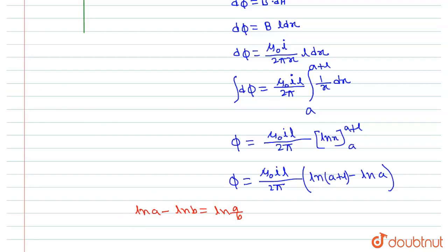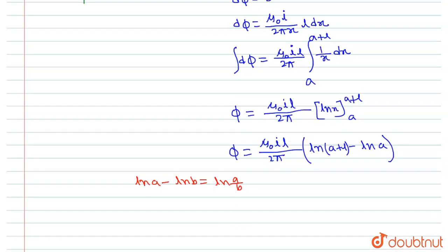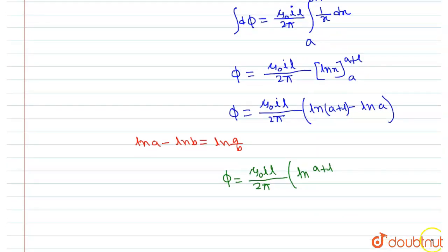From this we can write that the flux through the loop is φ equals (μ₀Il / 2π) times ln[(a + l) / a]. This is the total flux passing through the square loop, and this is the required answer for this question. Thank you.